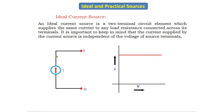In the ideal current source, the internal resistance is infinity — not zero. The symbol of the ideal current source shows a current source with no internal resistance connected to it.